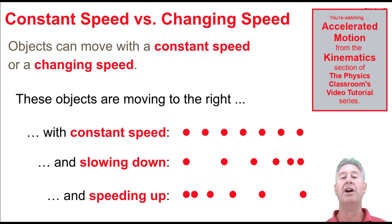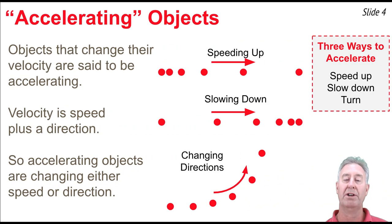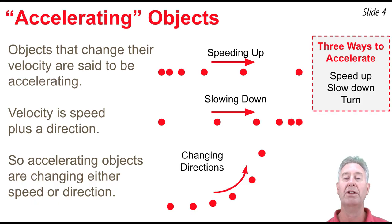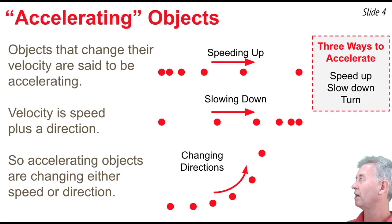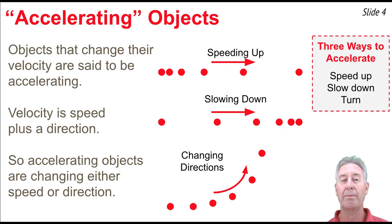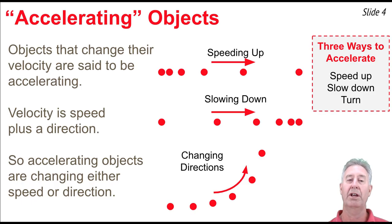Two of these options — slowing down and speeding up — are both examples of what we call accelerated motion. Accelerating objects are changing their velocity, which is the vector quantity that has both a magnitude and a direction. So accelerating objects are either changing the magnitude of the velocity, speeding up or slowing down, or changing the direction of the velocity. That too is an acceleration.